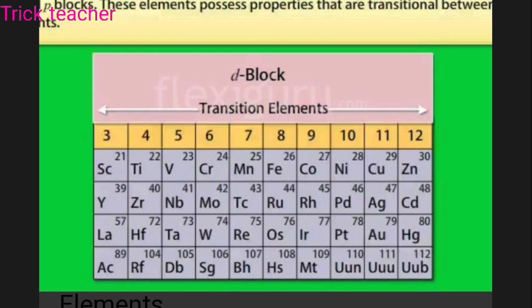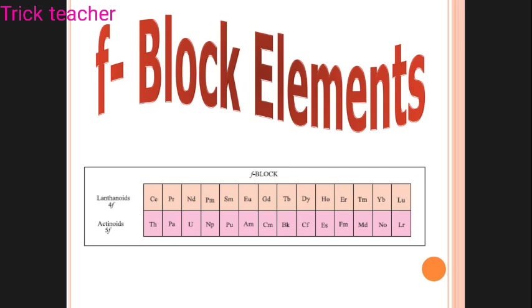Group 12, the last D-Block group, contains Zinc, Cadmium, and Mercury. This is an important group to consolidate the D-Block elements.